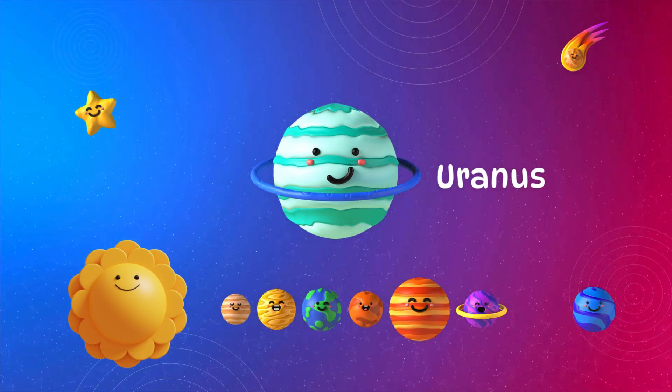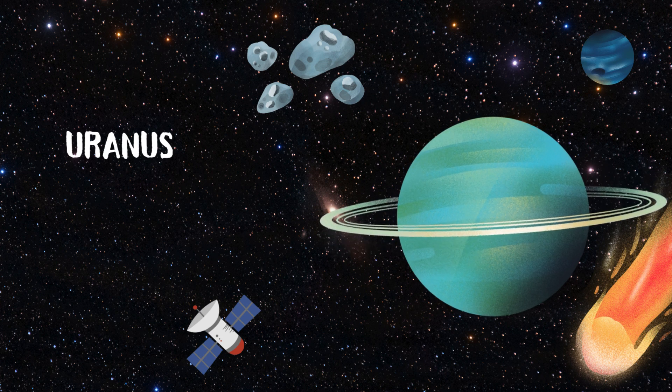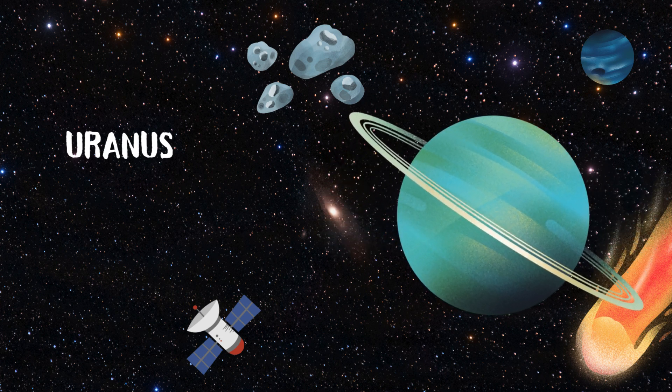Uranus spins on its side, a chilly place where cold winds glide.